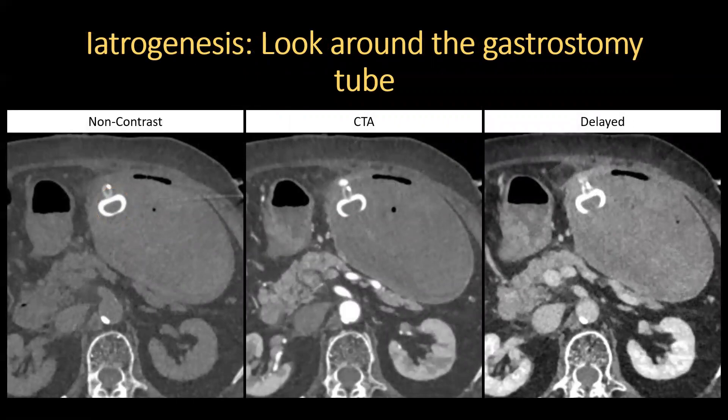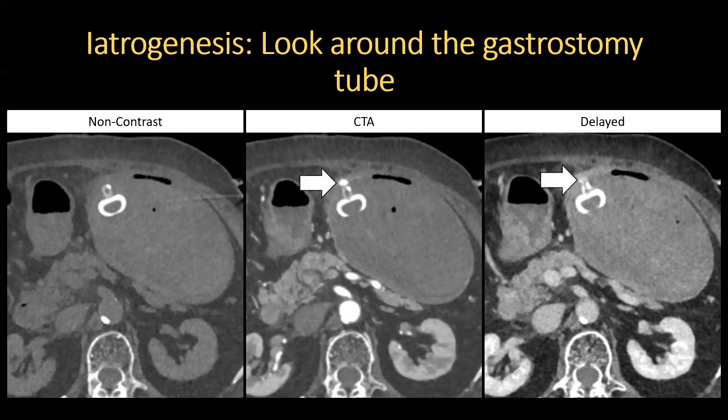This bleed was detected, but again highlights the importance of looking around the site of a newly placed line or tube. An 86-year-old female became hypotensive after recent gastrostomy tube placement. On non-contrast images, the stomach is distended with hyperattenuating contents. Arterial and delayed phases show contrast extravasation along the gastric wall at the gastrostomy site.